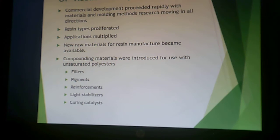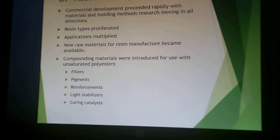Commercial development proceeded rapidly after that. Different resin types and different applications proliferated. New raw materials were introduced to diversify the type of resin systems that could be created. Then they compounded further with different fillers, pigments, reinforcements, light stabilizers, curing catalysts, and flame retardants — they started putting everything into unsaturated polyester resins to create a wide range of formulations.